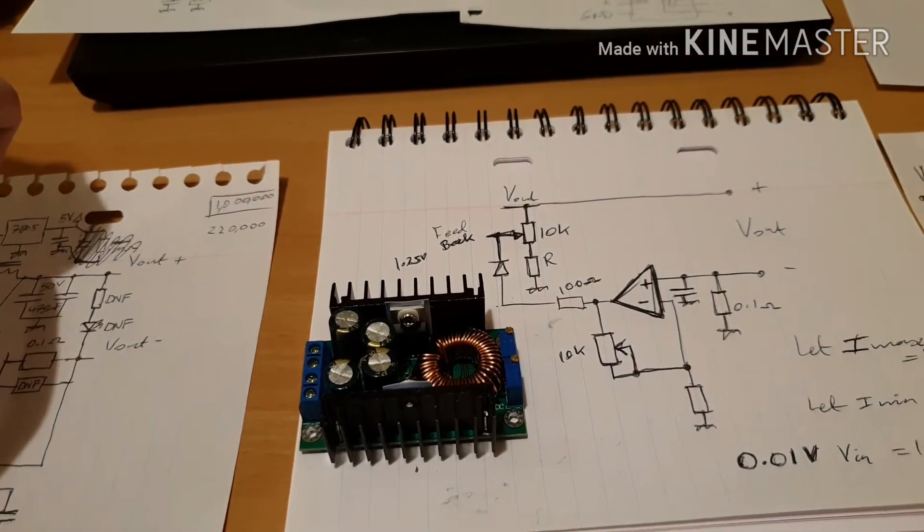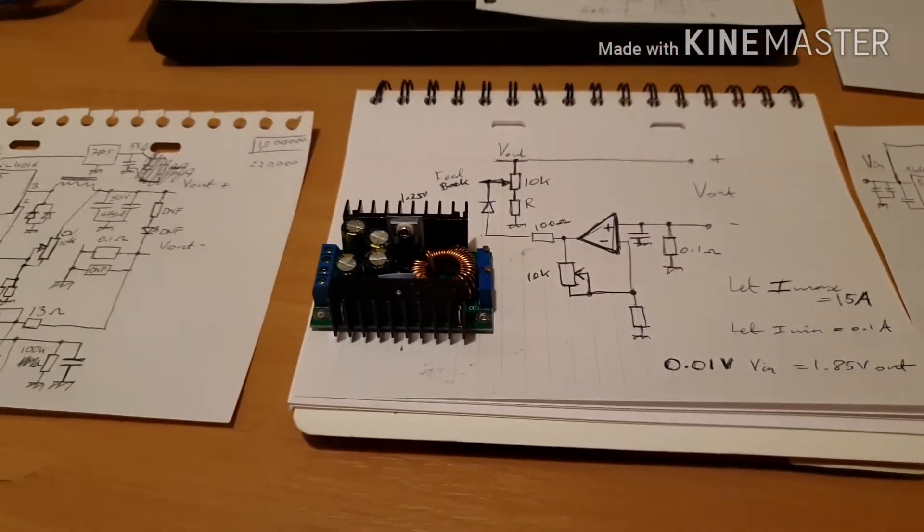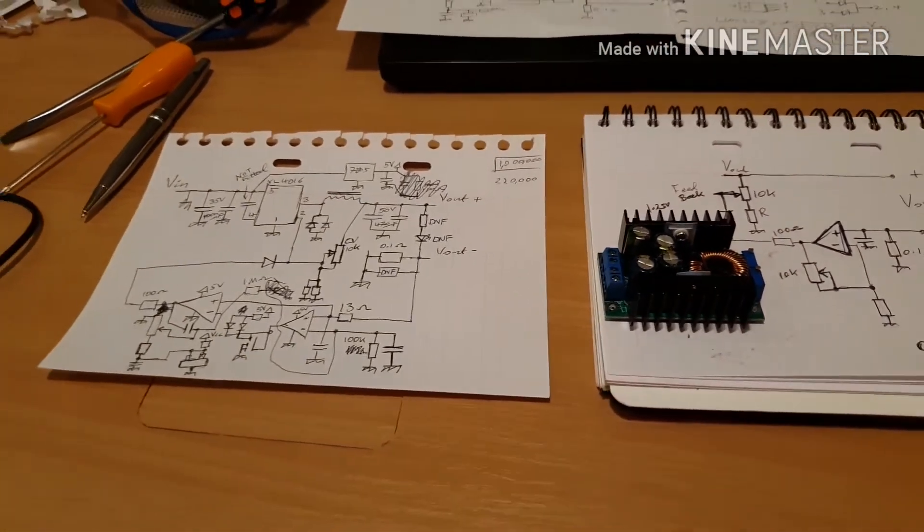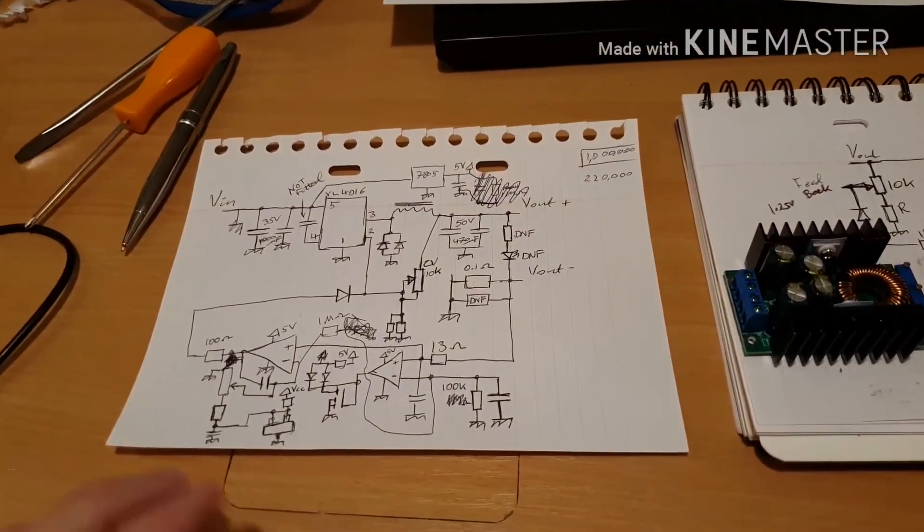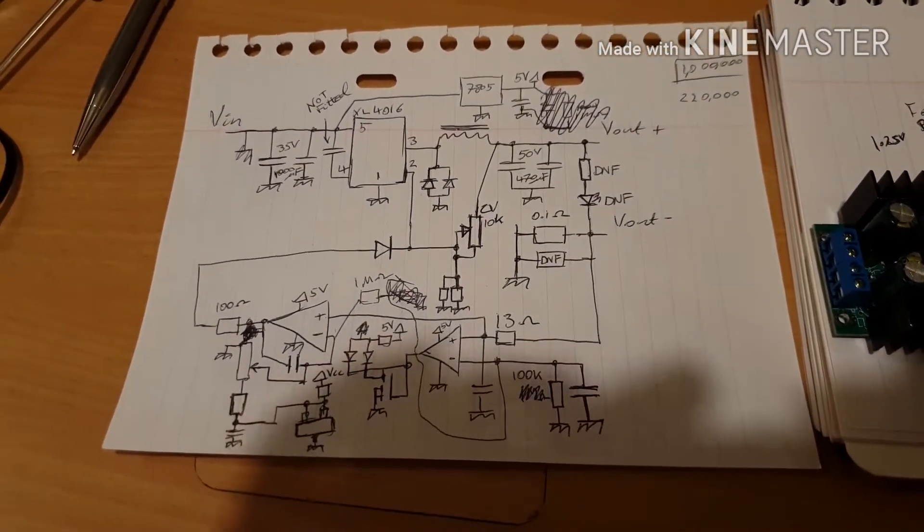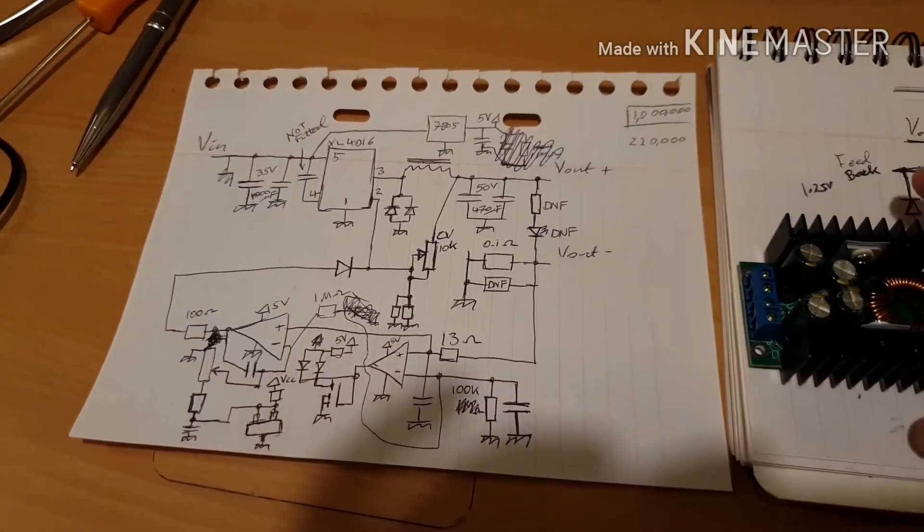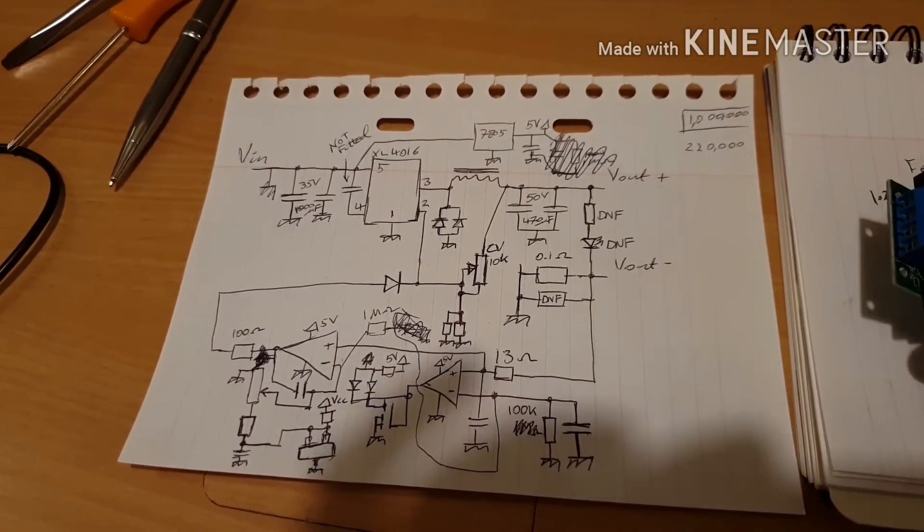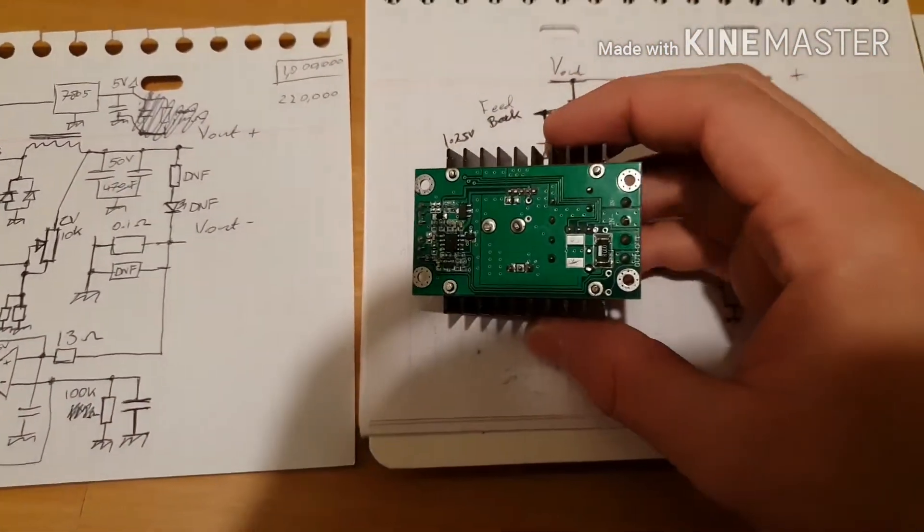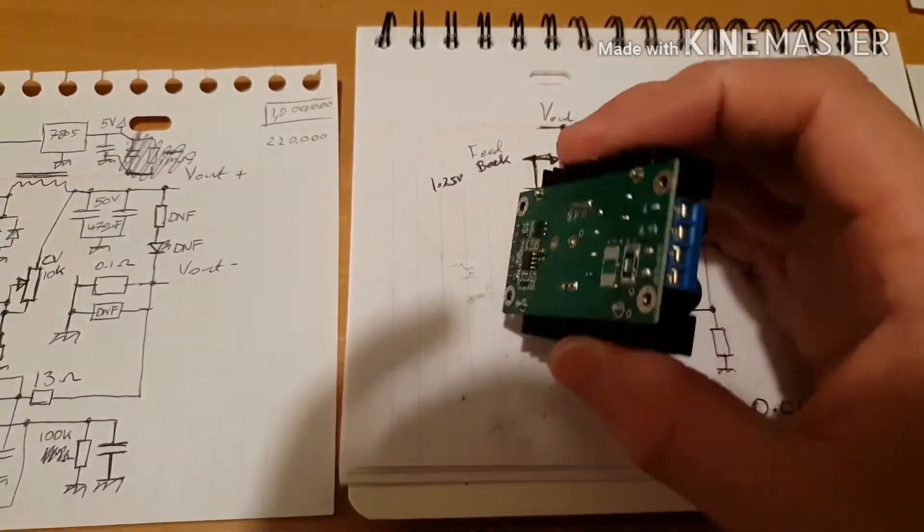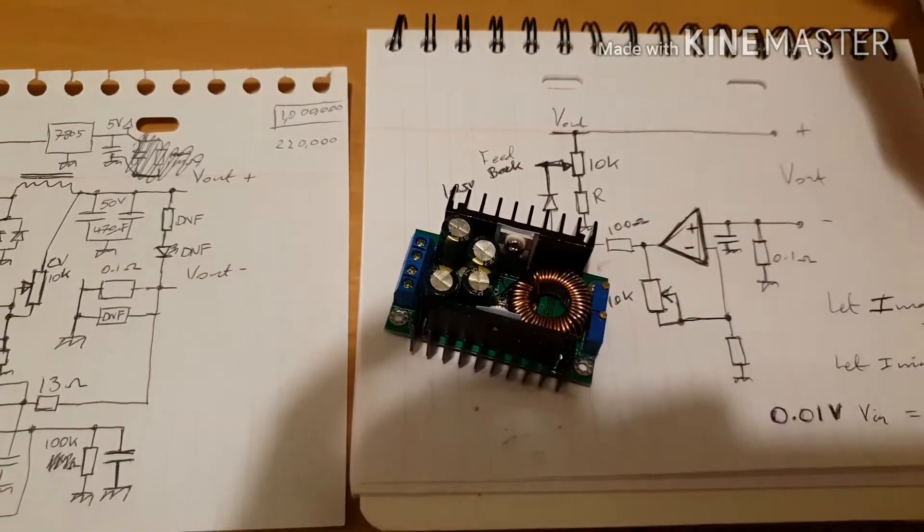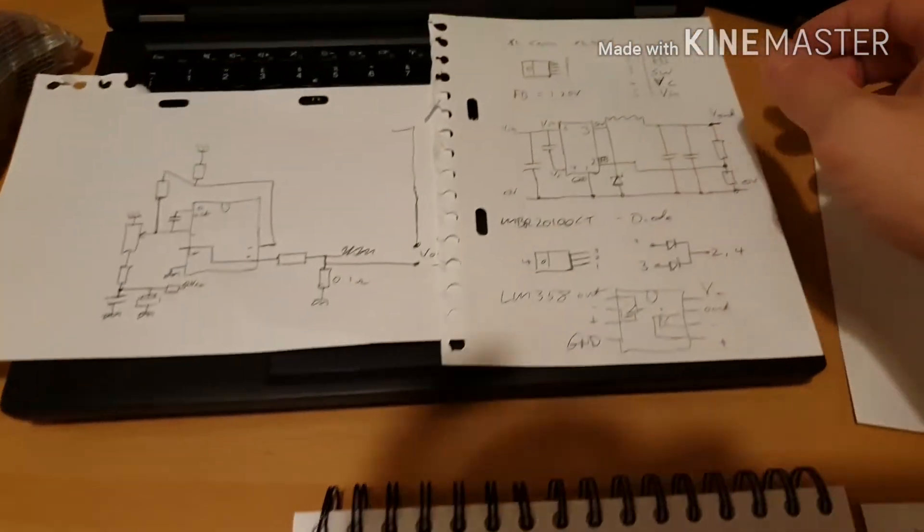So I thought I would reverse out the schematic of the thing and figure out how it works. This is the schematic I actually drew as I was tracing all the tracks out. It looks horrendous because my drawing is not very neat but really the only things on here are a chip here on this heatsink.